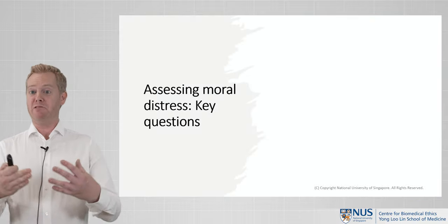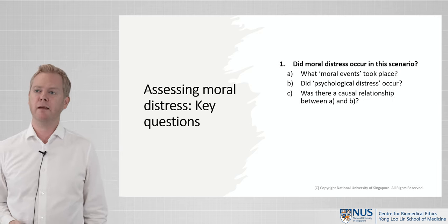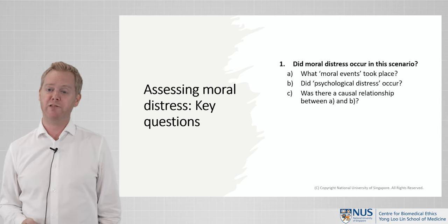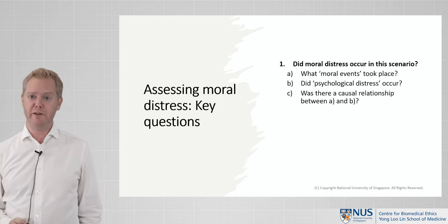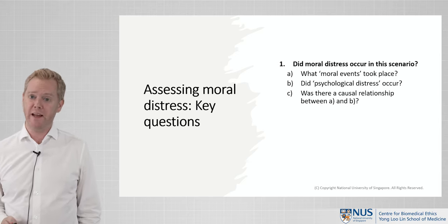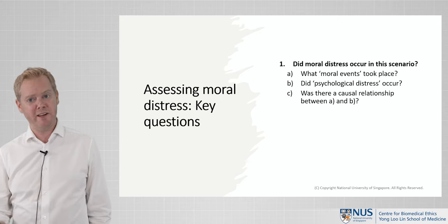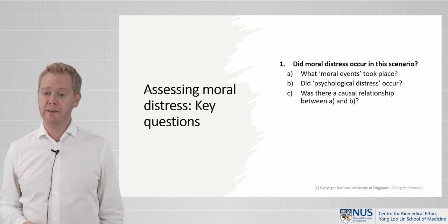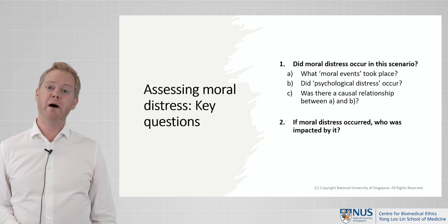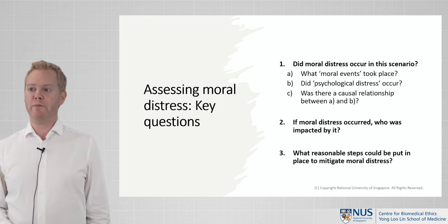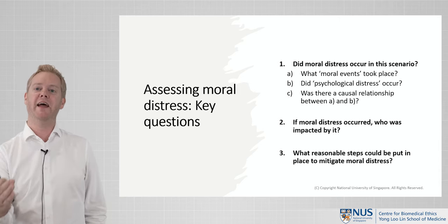When we think about whether moral distress was present in a situation like this and how we might identify its features, I think there are three key questions to consider. First, we've got to get clear on whether in this scenario moral distress occurred at all. Drawing on and developing the Morley and Colleague framework, the following three questions need to be addressed: What, if any, moral events took place in that scenario? Did psychological distress take place or occur? And thirdly, was the psychological distress that was experienced a direct result of the moral events identified? Second, if indeed moral distress did occur, who was impacted by it? And finally, what reasonable steps could be put in place to mitigate those different people's moral distress? We're working through from cause to effect to mitigation essentially.